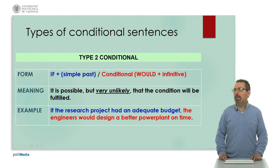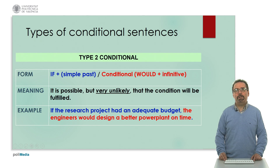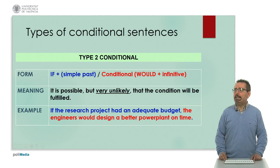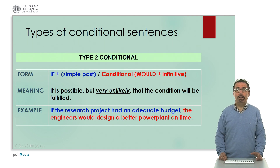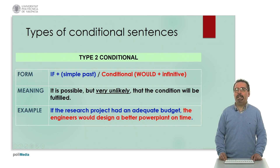In the type two conditional we have 'if' plus simple past, followed by the conditional form expressed with 'would' plus infinitive. In this case it is possible but very unlikely that the condition will be fulfilled. As we can see clearly in the example: 'If the research project had an adequate budget, the engineers would design a better power plant on time.'